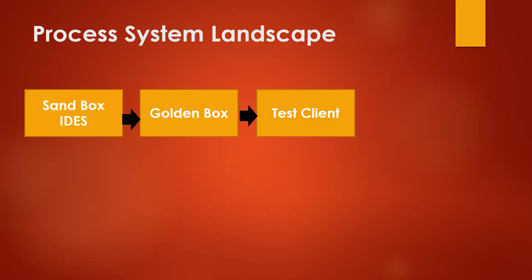That test client will be tested by the quality team — manual testers or automated testers. They write test scripts and test cases and execute them to verify whether the functionality is working fine. Once confirmed, it will be transported to the production client. That transport request is also handled by the Base system. This is the system landscape they may ask about in the interview.